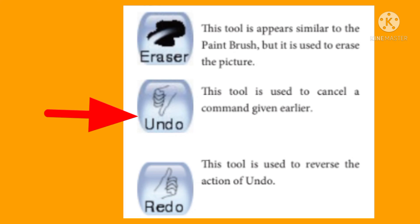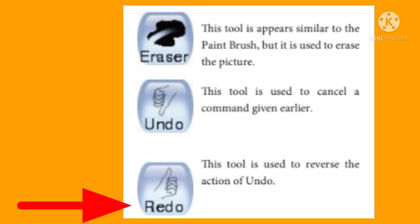The undo tool is used to cancel a previous command. The redo tool is used to reverse the action of undo. If we cancel a command using undo, we can press the redo button to restore it.